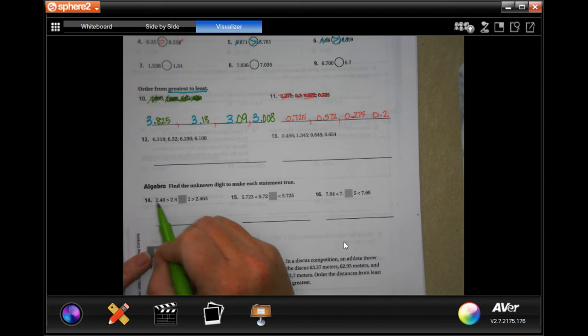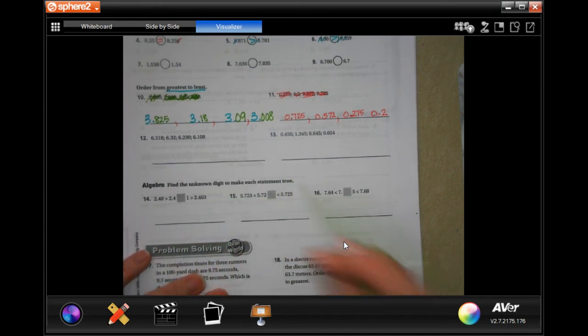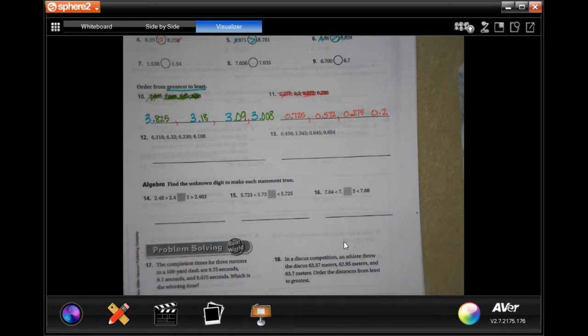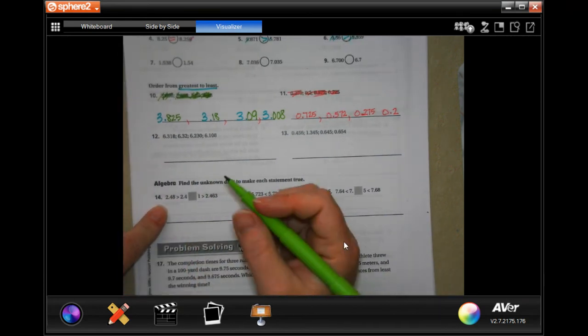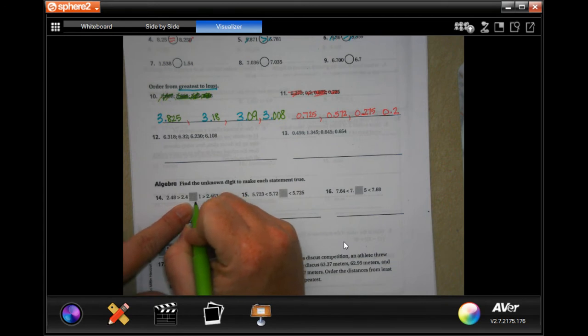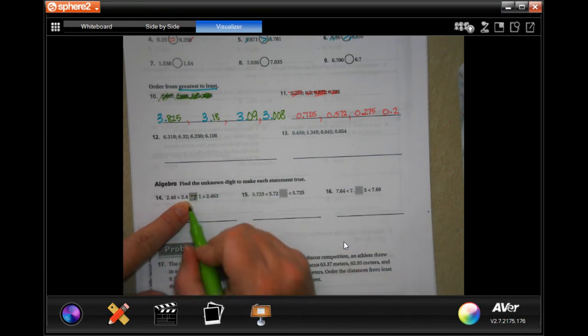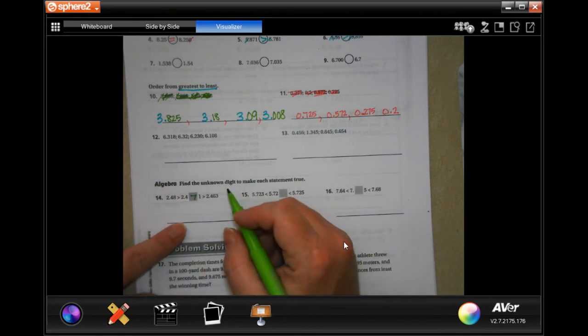So, these ones say to find the unknown digit to make the sentence true. It's going to go 0.248 is bigger than 2.40. That's true, right? So, we need, hmm, give me just a second. So, if we were, oh, so 0.248 is bigger than 0.247.1. If we put 2.481, that would be wrong, because that would be bigger than this one. Does that make sense, guys?